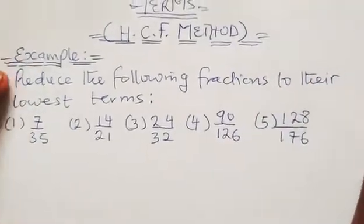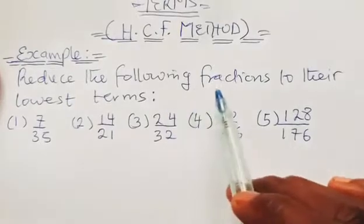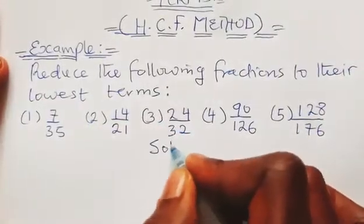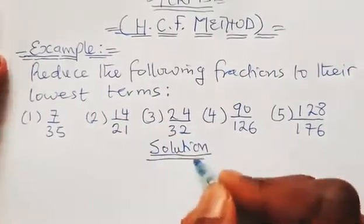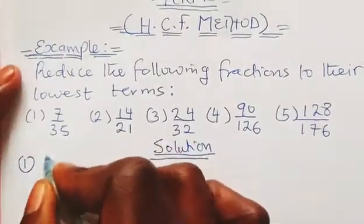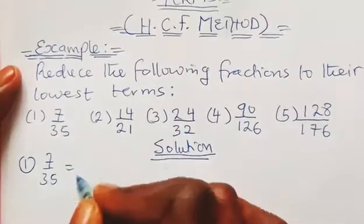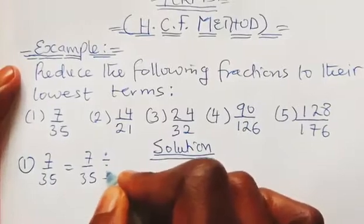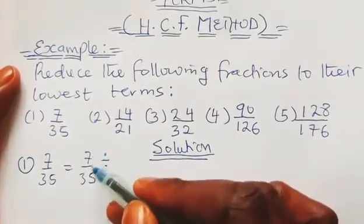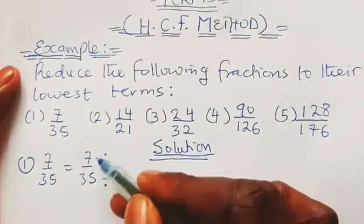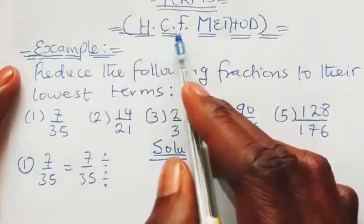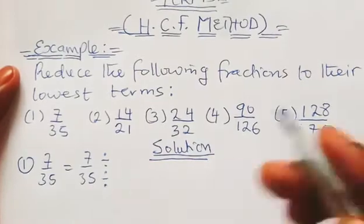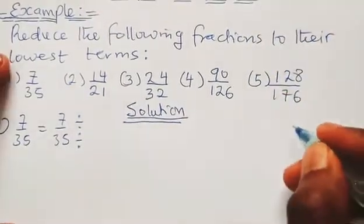In this example, we are told to reduce the following fractions to their lowest terms. Let's take the first example: we have 7 upon 35. We are going to find a number to divide both the top and bottom numbers — and that number is the highest common factor, or HCF, between 7 and 35.